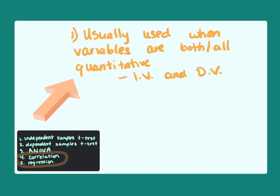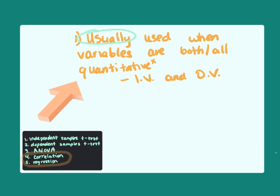Correlation and regression can be used when both of the variables of interest are quantitative. I'm emphasizing this is usually true because in some cases these are flexible and can be used with non-quantitative variables, but we'll be leaving those out of our discussion today because our focus is the common and basic use of each of these techniques.